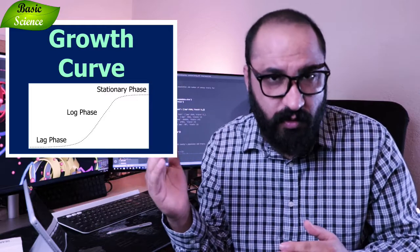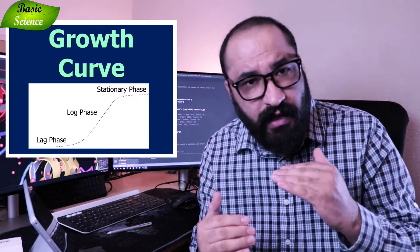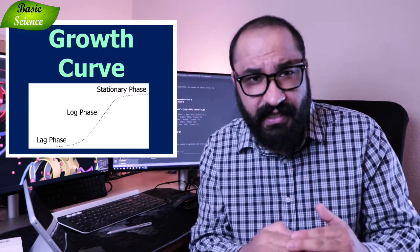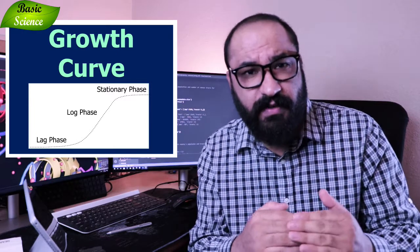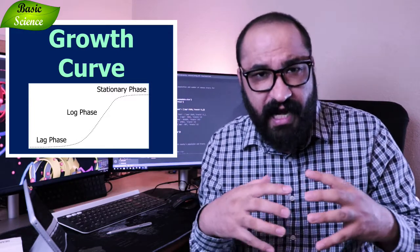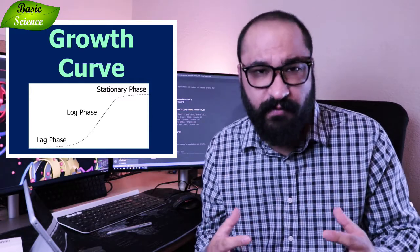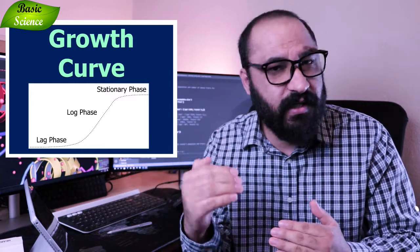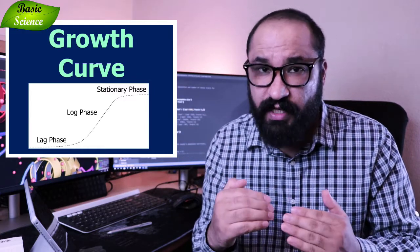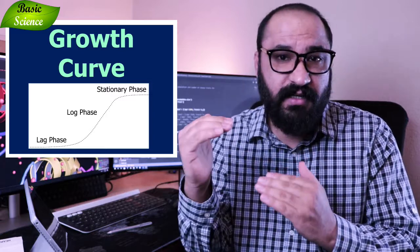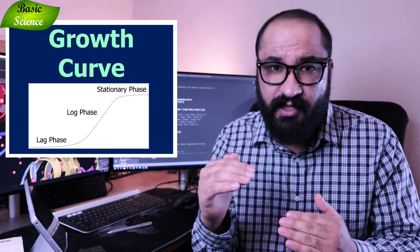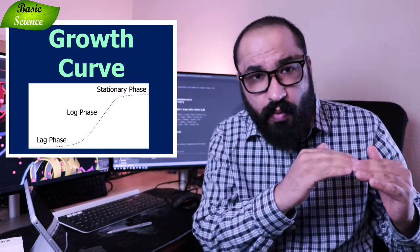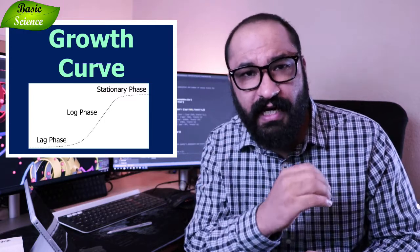Those who are not aware: the bacterial growth curve is a sigmoid curve where you have three phases — lag phase, log phase, and stationary phase. In the lag phase, bacterial cell division is minimum because the bacteria is trying to prepare for cell division. In the log phase, there is an exponential increase in bacterial cell division, where you see the highest number of cells in your culture. After that, you have a stationary phase where cell division slows down.